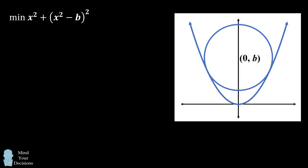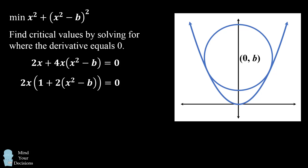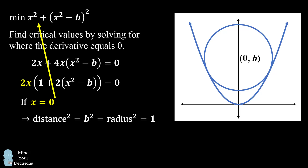We'll find the critical values by solving for where the derivative equals zero. We end up with the following equation. We then factor out 2x and solve this equation for where x leads it to equal zero. There are two possibilities. One is that 2x could equal zero, meaning x equals zero. We substitute this back into our distance squared function, which means the distance squared equals b squared. The distance from the center of the circle to the parabola has to equal the radius squared, which is 1, so b squared equals 1. This leads to two possible values: b equals positive 1 or b equals negative 1.